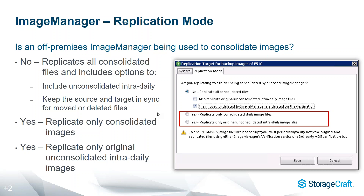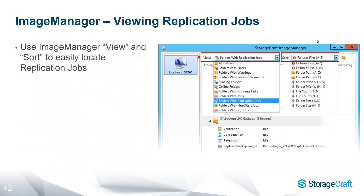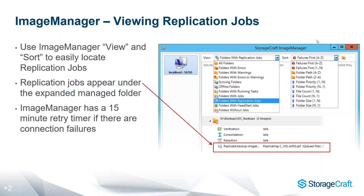A lot of this comes down to talking with the customer about their expectations. You all know your RPO — recovery point objective — and RTO — recovery time objective. All the schedules you set up, how often you're backing up the server, and how often you're replicating, all feed into both the recovery time objective and the recovery point objective. Image Manager also has a 15-minute retry timer if there are connection failures.